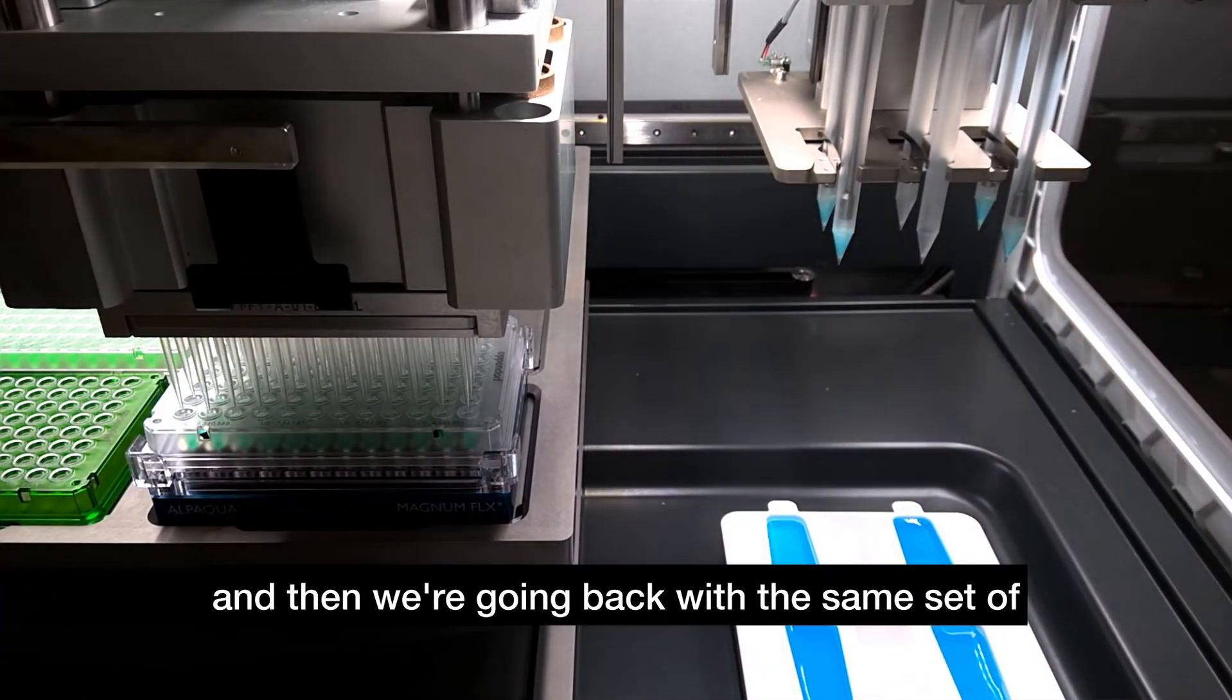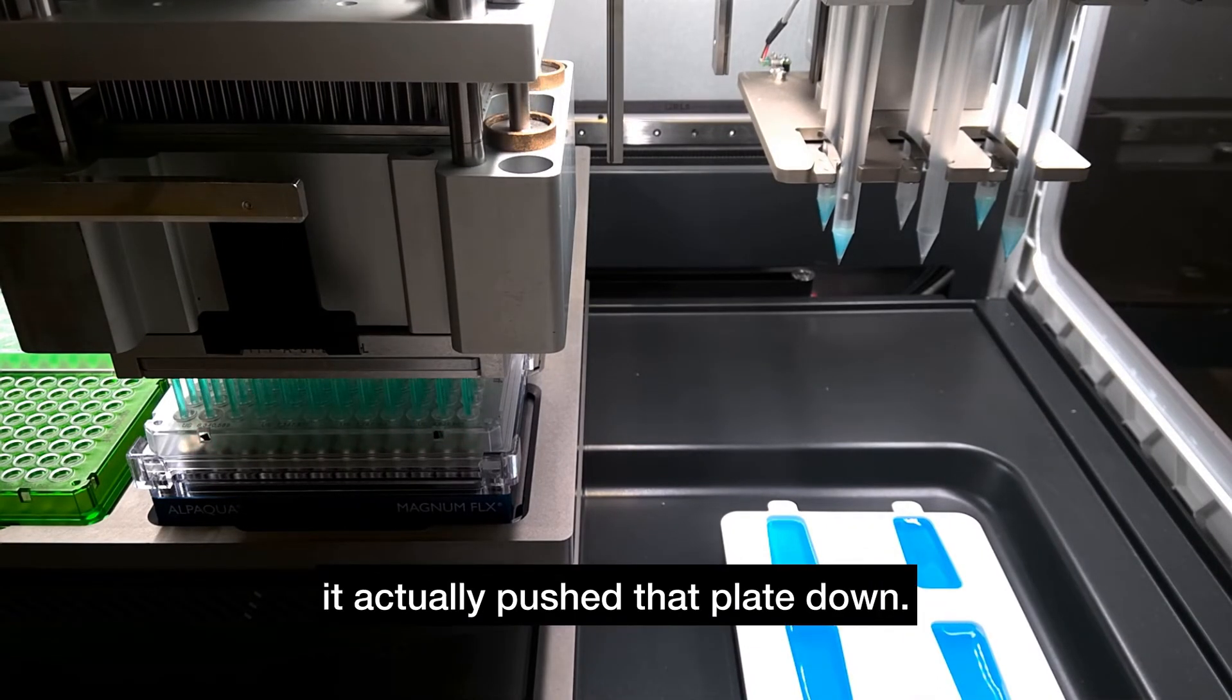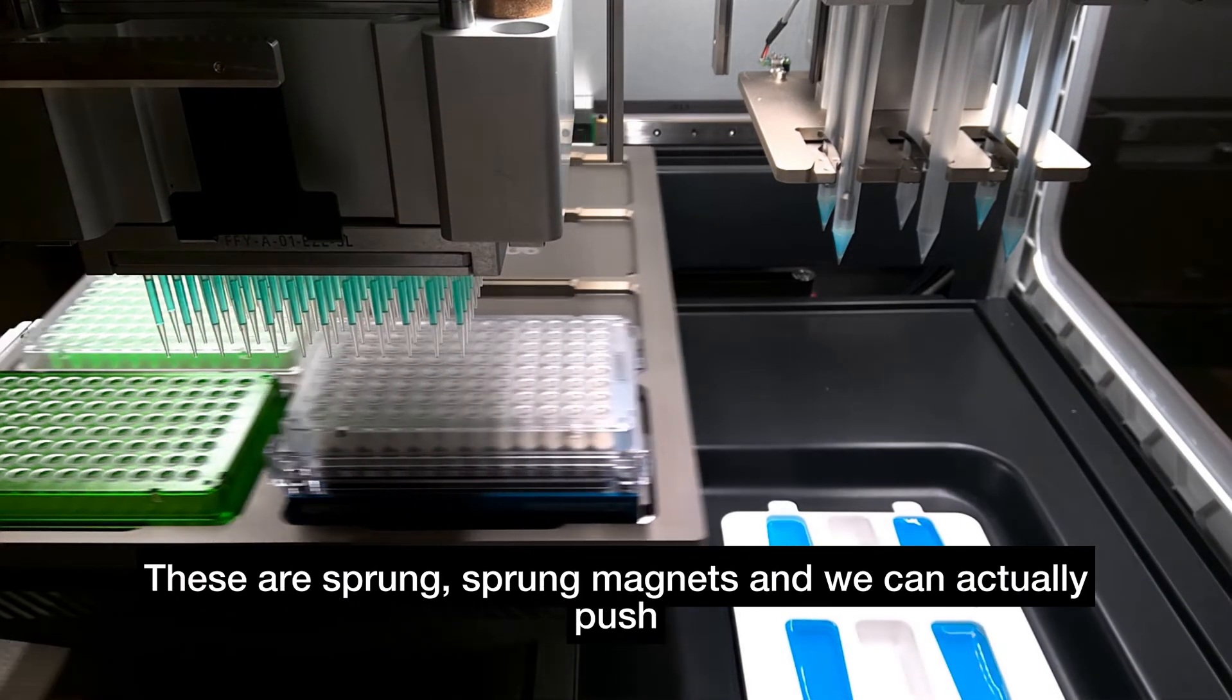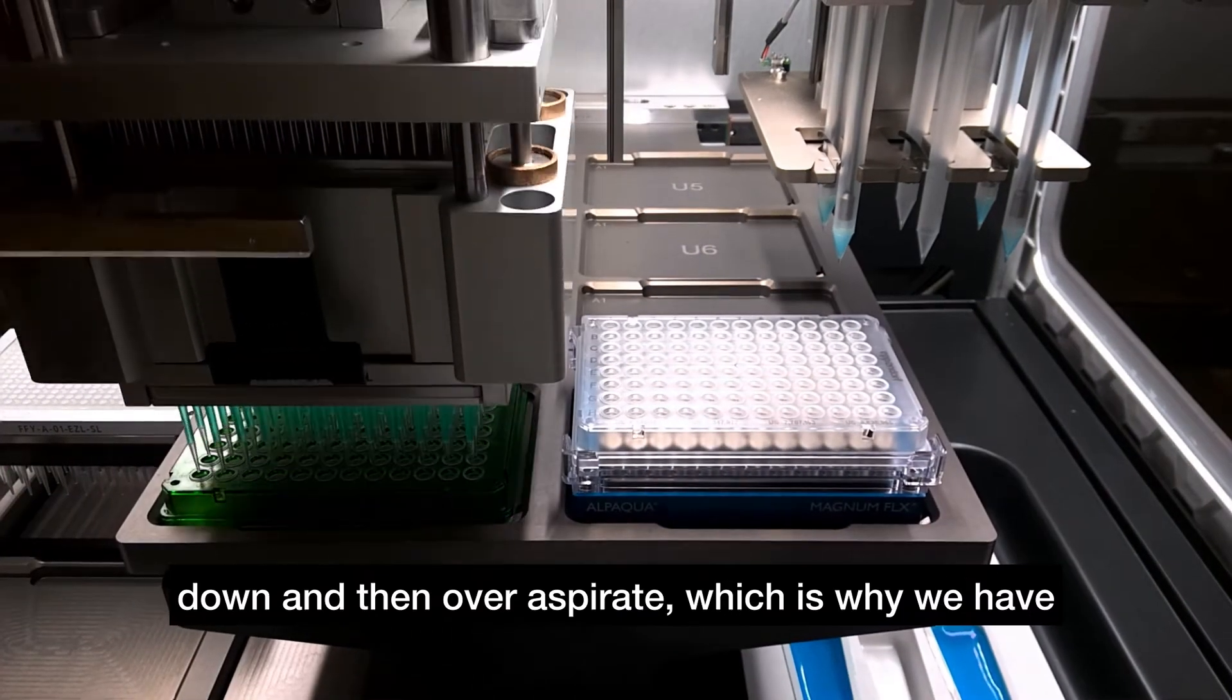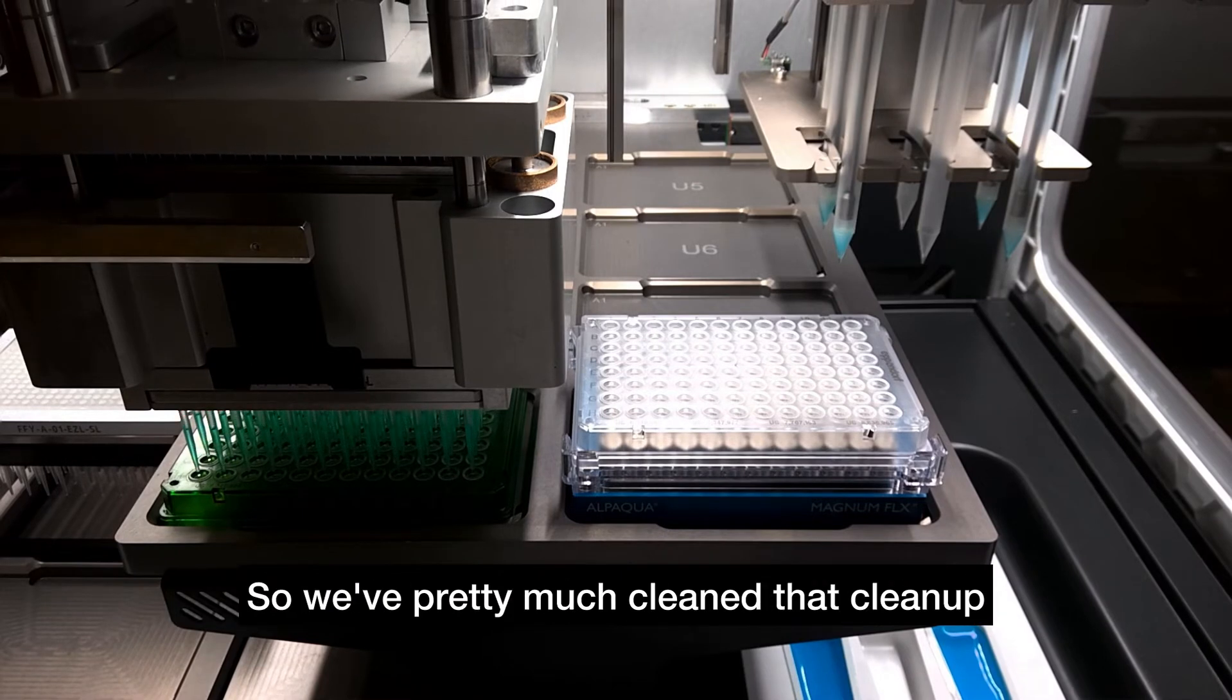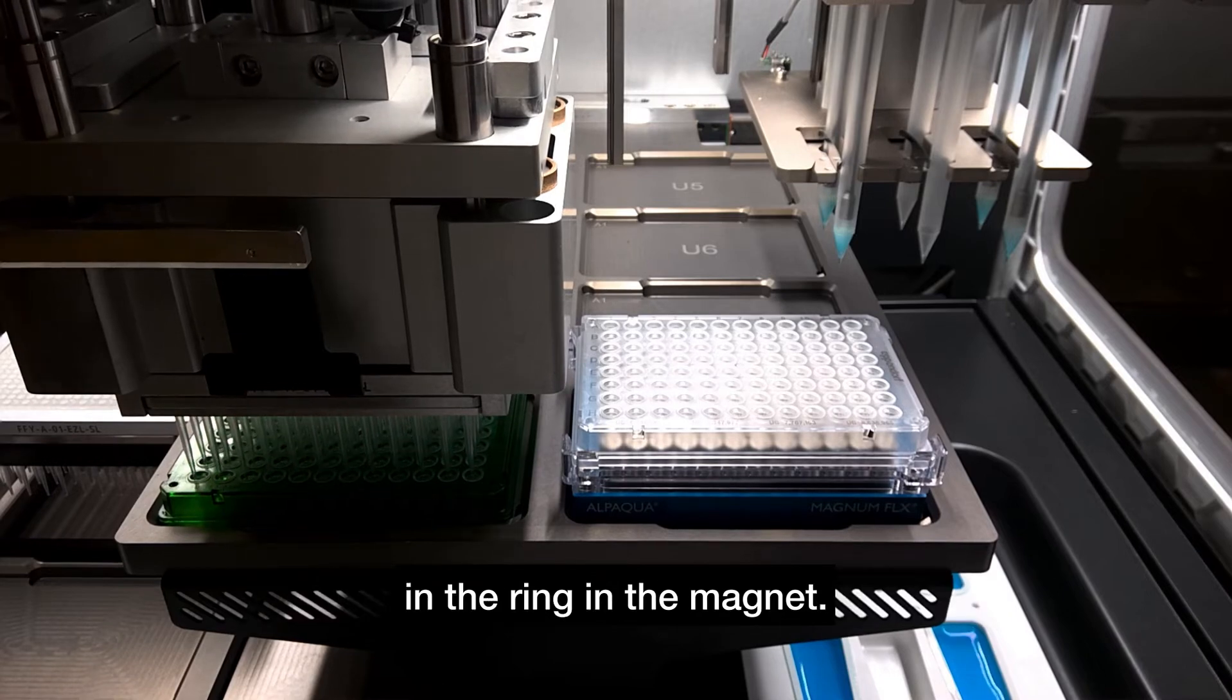And then we're going back with the same set of tips that we used for the initial transfer. And here you may notice that it actually pushed that plate down. These are sprung magnets and we can actually push down and then over aspirate, which is why we have that big air gap at the bottom of the tips. So we've pretty much cleaned that cleanup plate out and only left the magnetic beads in the ring in the magnet.